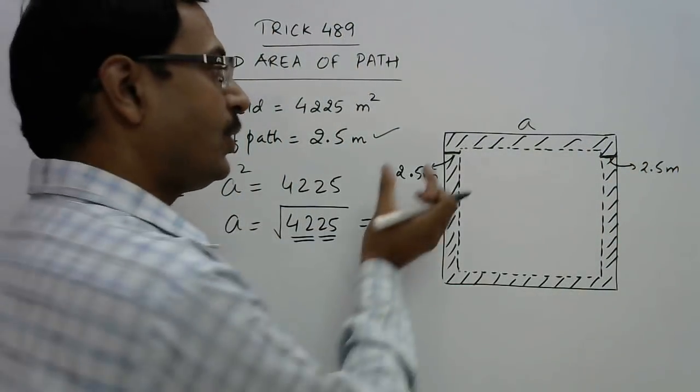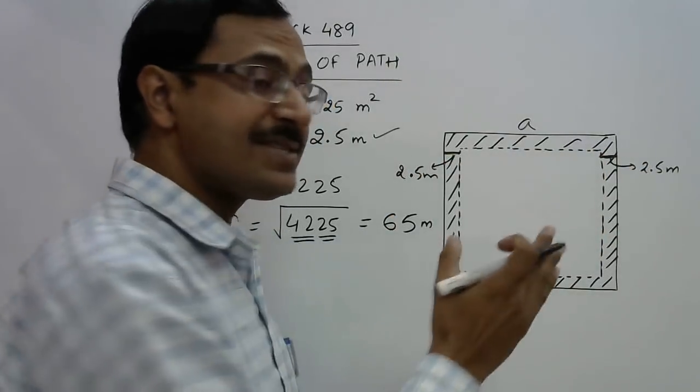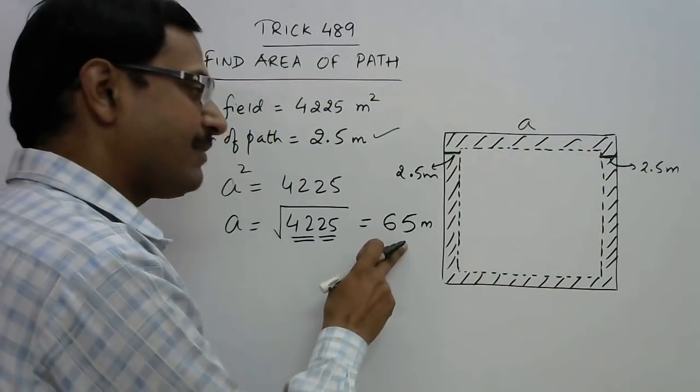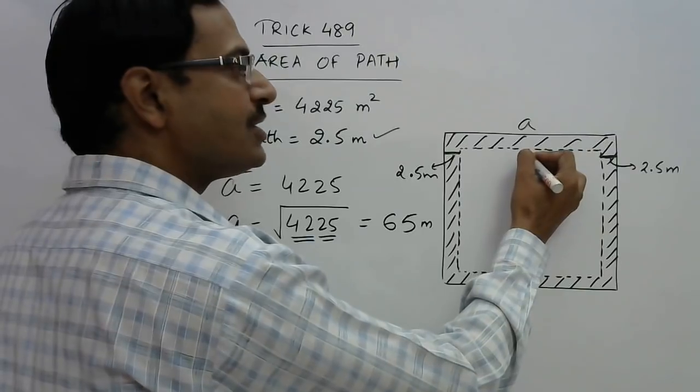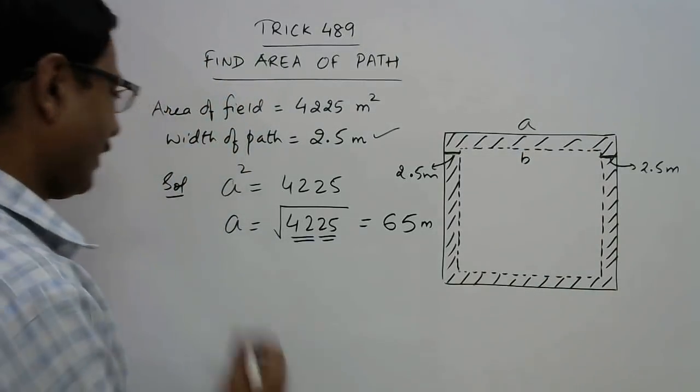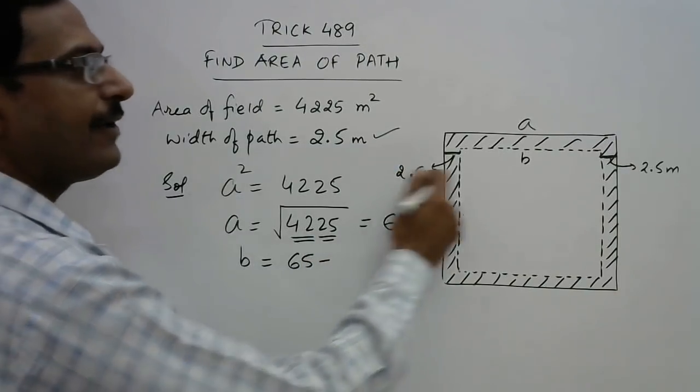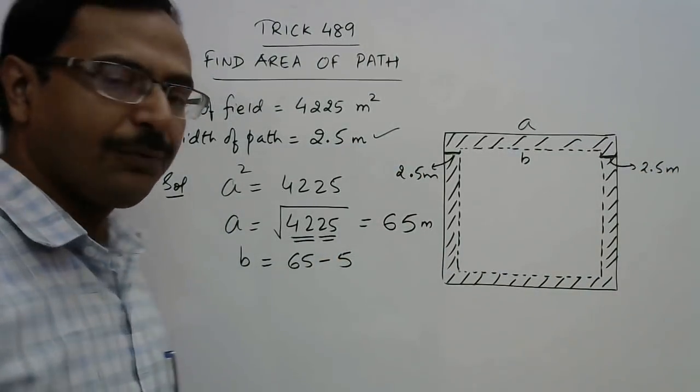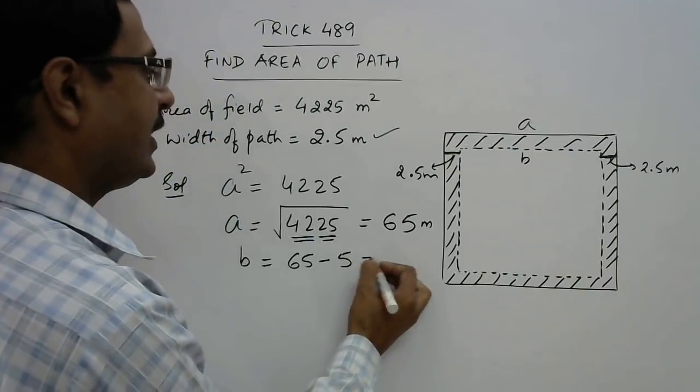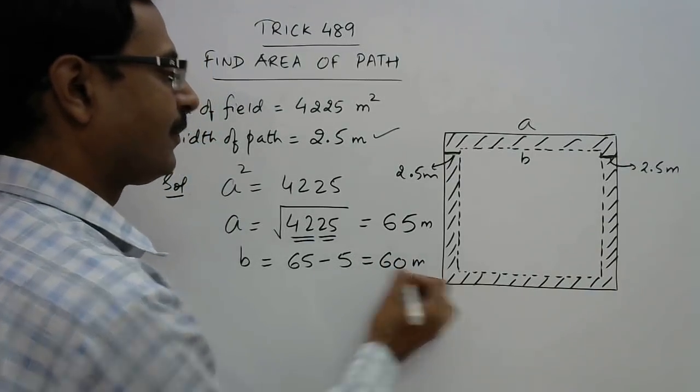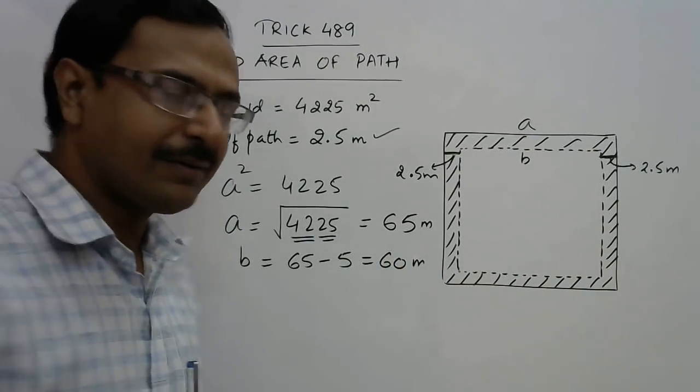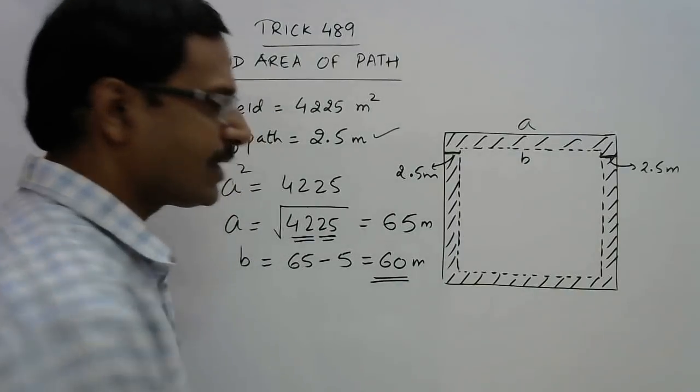On both sides we have 2.5 and 2.5, which is included in 65. So the inner edge, that is b, will be obtained by subtracting 2.5 plus 2.5, which is 5, from the outer edge. So the inner edge is 60, and there we are, this is what was required.